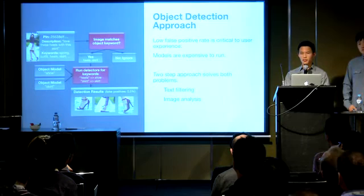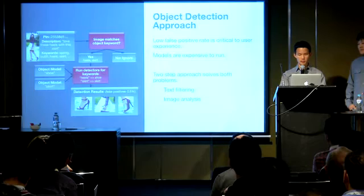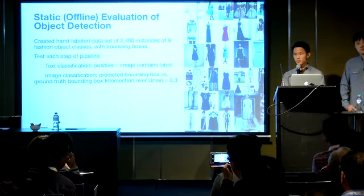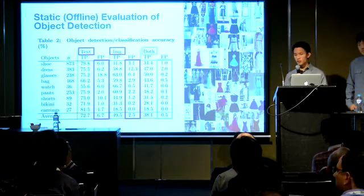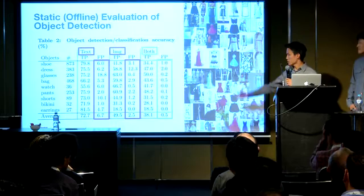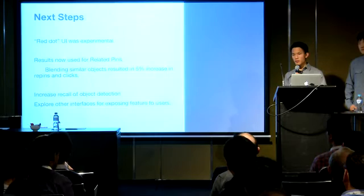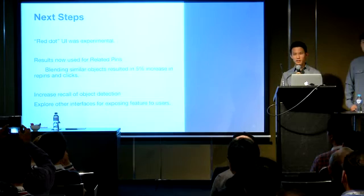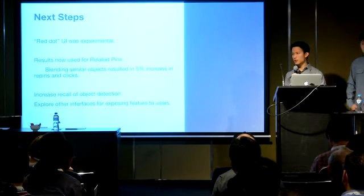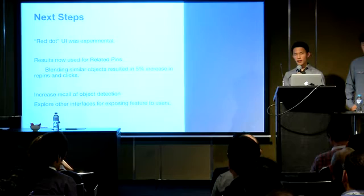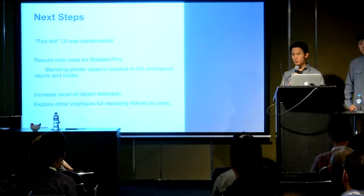By combining text filtering with image analysis, we're able to get the false positive rate well below 1%. We've created a hand-labeled dataset of objects to evaluate this, and the false positive rate drops significantly when both stages — text filtering and image-based detection — are used together. We ultimately decided to launch this not in the red dot form, but by blending similar objects into Related Pins recommendations. This gave us a 5% increase in repins and clicks. Next, we're working on other techniques for object detection that will dramatically improve recall, and exploring other interfaces to show this feature to users.